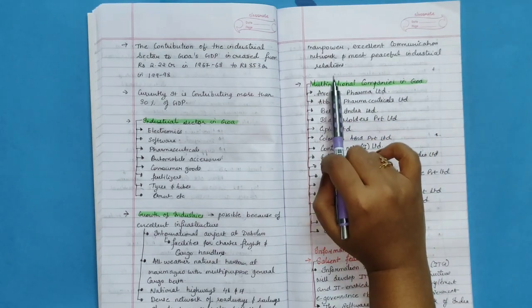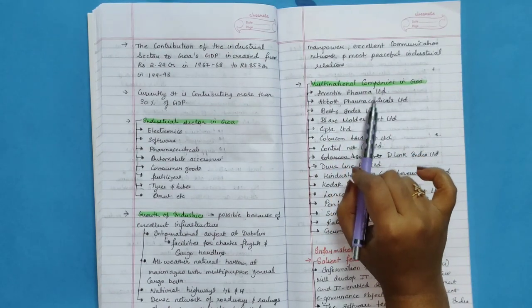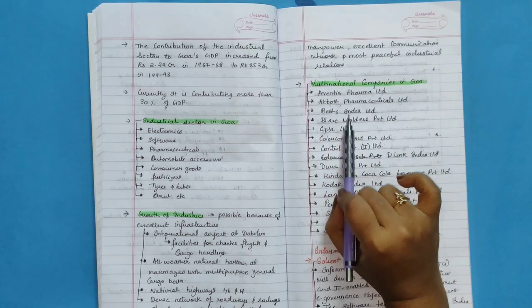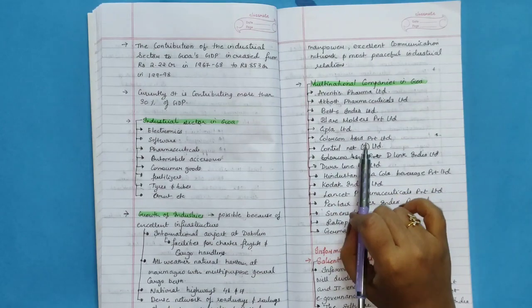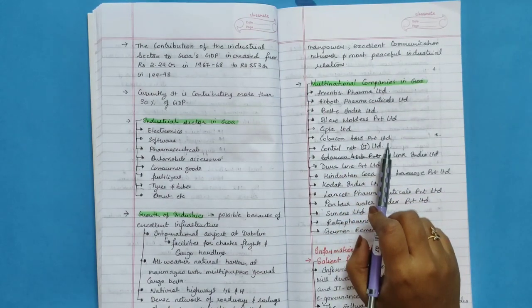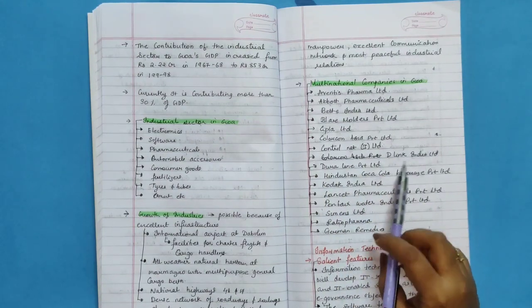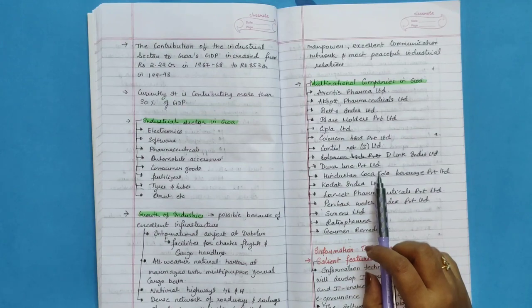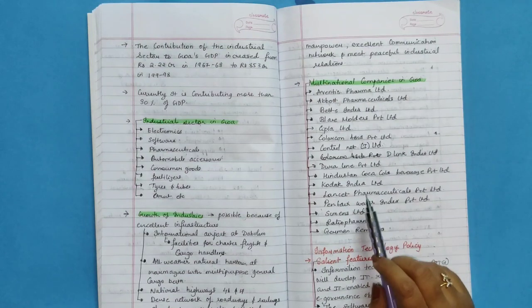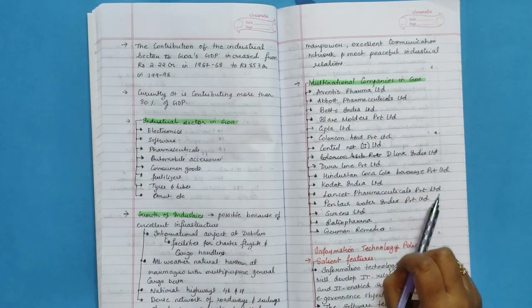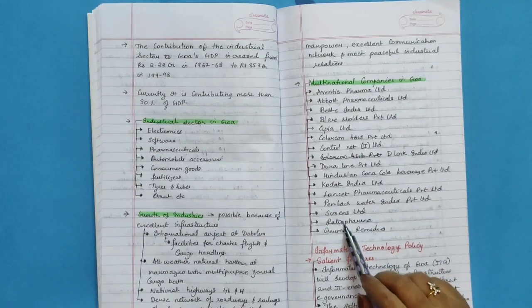Multinational companies in Goa: Aventis Pharma Ltd., Abbott Pharmaceuticals Ltd., Batliboi Ltd., BLR Smulders Ltd., Cipla Ltd., Colgate Asia Ltd., Control Net Ltd., D-Link India Ltd., Duraline Ltd., Hindustan Coca-Cola Beverage Ltd., Kodak India Ltd., Ranbaxy Pharmaceuticals Ltd., Pfizer India Ltd., Zuari Cements Ltd.